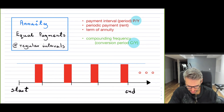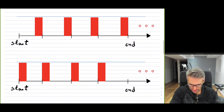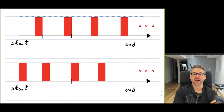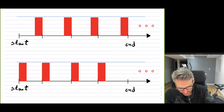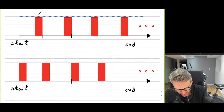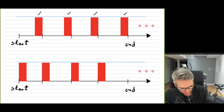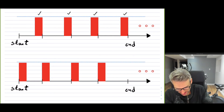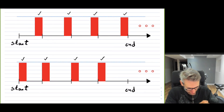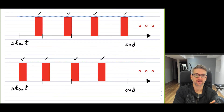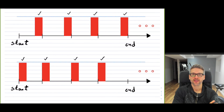So I have two timelines here. There's a timeline where you can see payments — we have one, two, three, and four payments on the top timeline, and also four payments on the bottom timeline. In both cases, we have four payments, and they could go on for as many payments as you like. The first concept I want you to understand is the difference between an ordinary annuity and an annuity due.